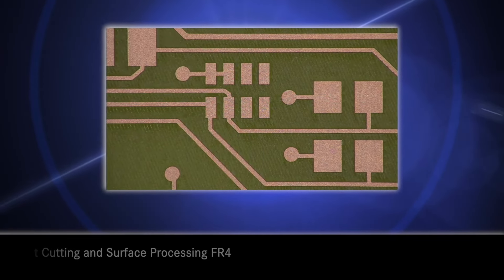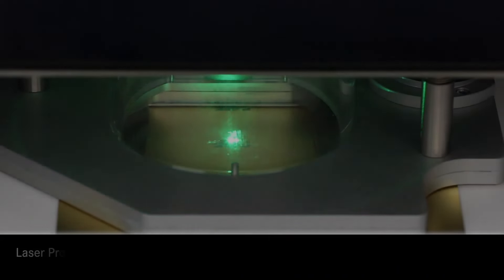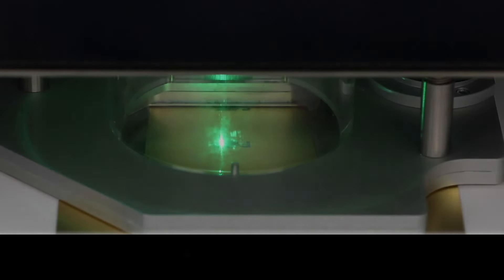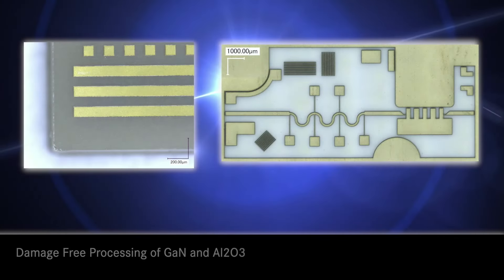Beyond the more commonly known rigid and flex materials, the ProtoLaser R4 can also laser etch and cut both unfired and fired ceramics, from green tape to gallium nitride and aluminum oxide, to name just a few.